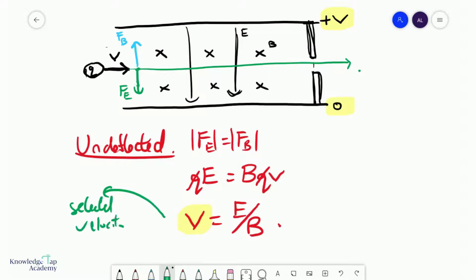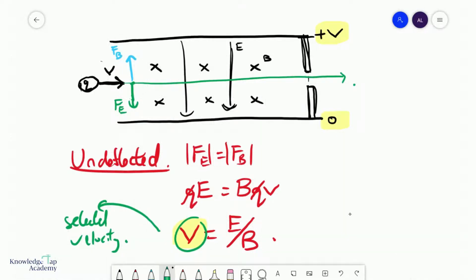So if your particles have this velocity and this velocity alone, they will be the ones who will pass through the velocity selector undeflected, and they'll be emerging on this side.